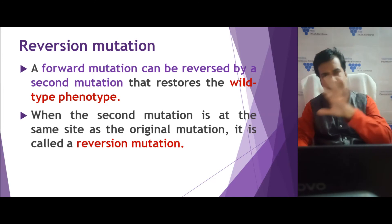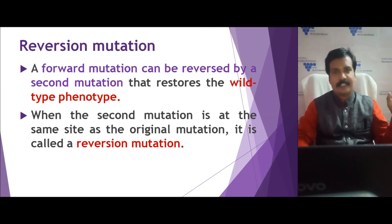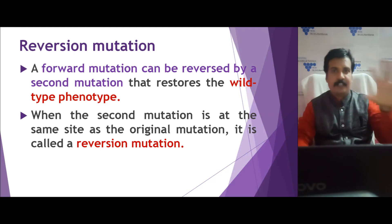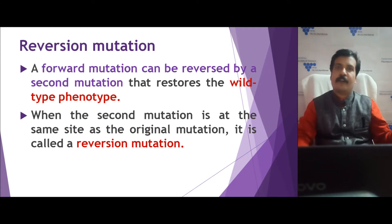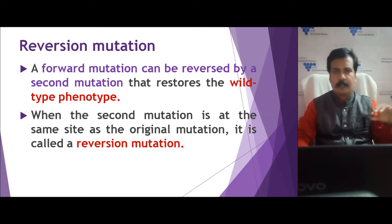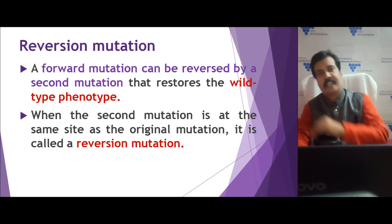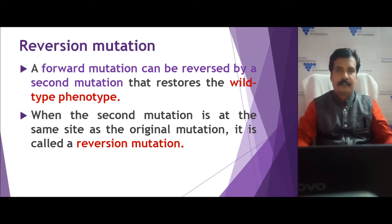Initially it was identified like this. Later it was also identified that the reversion is not necessarily occurring at the same location — it can also occur at another location, changing to another mutant type. So reversion mutation has been found to occur in this manner as well.